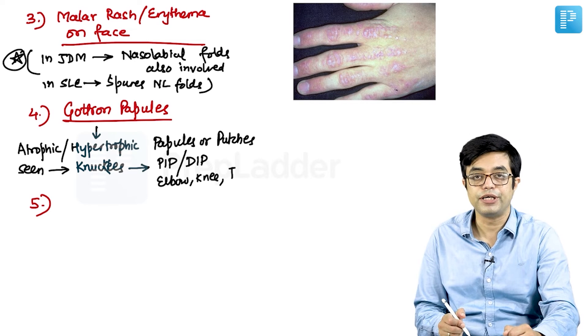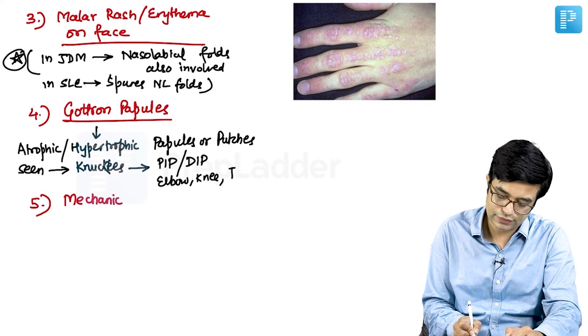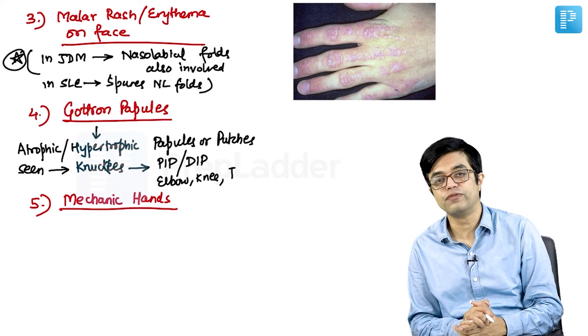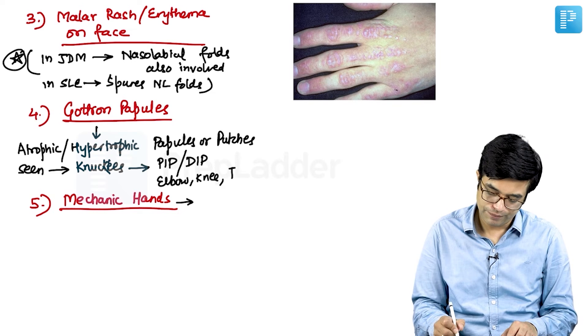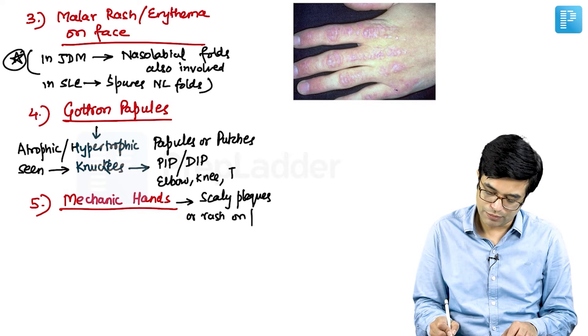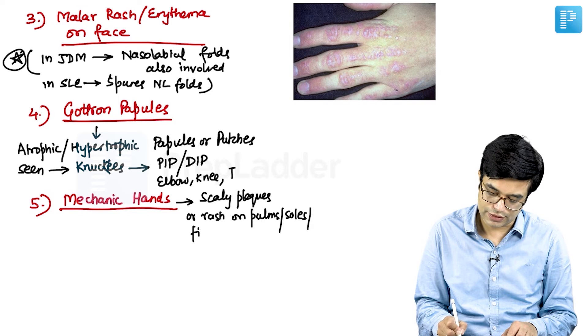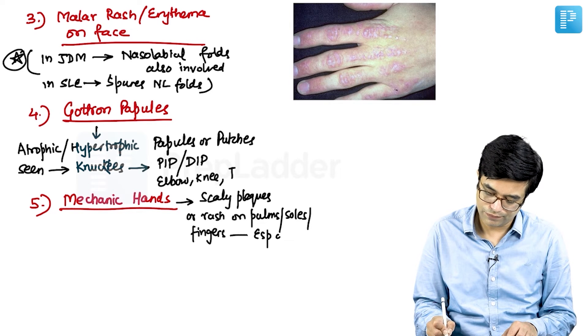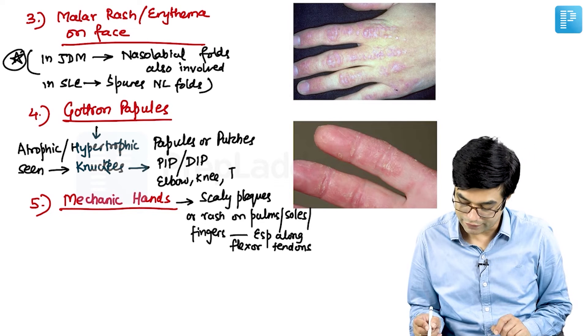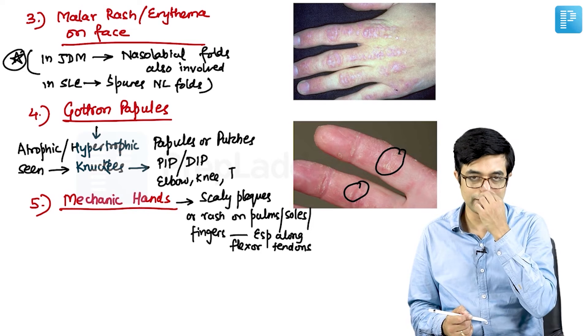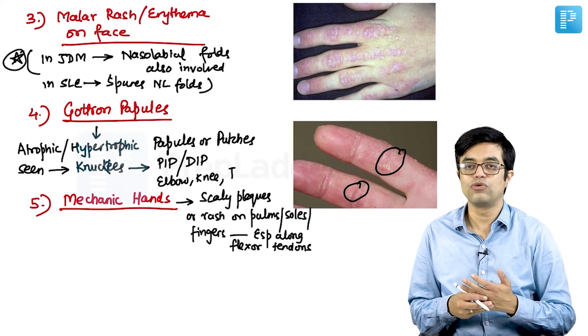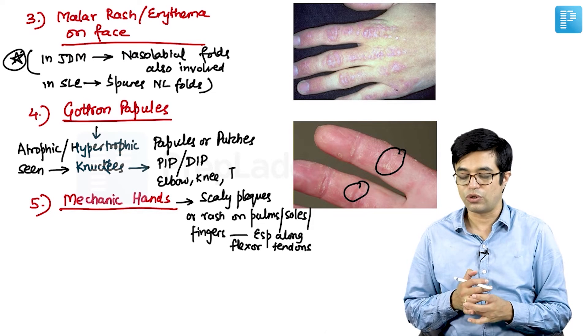Fifth feature which is seen in some of the patients of JDM is occurrence of mechanic hands. Mechanic hands is not very commonly seen in children, but if they are seen, they are strongly associated with anti-Jo-1 antibodies. Mechanic hands refers to a condition where there will be scaly plaques or rash appearing on the palms, soles or the palmar aspects of the fingers, especially along flexor tendons. If I have to show you a picture, this is a patient who is having these mechanic kind of rash which is present. Since they are commonly seen in mechanics who are working with instruments and chronic calluses tend to form, these calluses tend to undergo atrophy and scaly rash may appear. That kind of a rash appearing in these children is called as mechanic hands.